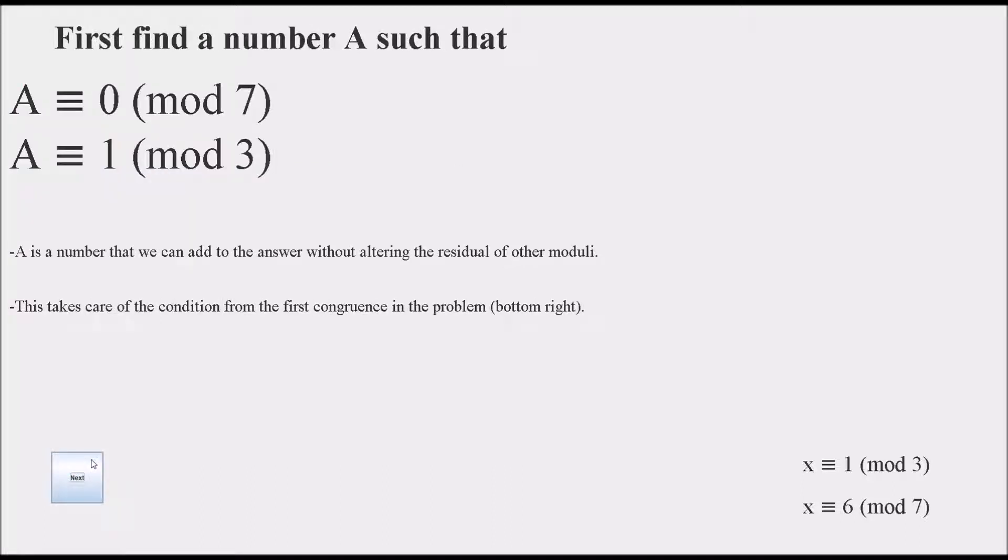So the first step to solving any Chinese remainder theorem problem is to find a number A such that A is congruent to 0 mod 7 and A is congruent to 1 mod 3. If we look at the bottom right corner where the initial conditions were, we can see that A is going to be a number that doesn't affect this second condition because it's 0 mod 7, but does fulfill the first condition because it's going to be 1 mod 3.